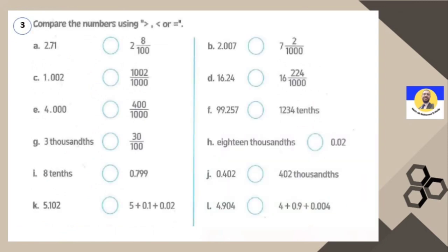Question 3: compare using greater than, smaller than, or equal. Here, habaybi, we might have different forms — like fractions or mixed numbers. You first need to convert them to the same form so you can compare. For example: 2.71 versus 2 and 8/100. Writing 8/100 as a decimal gives 2.08. So comparing: 8 in hundredths with 0 in tenths — 2.71 is greater. The next one: one number starts with 2 and the other with 7, so 7 is immediately the greatest.